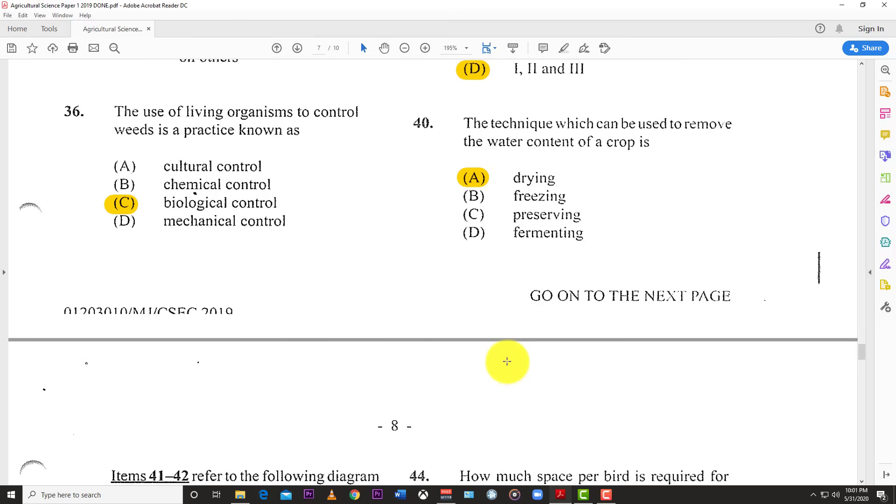Number 39: Which are advantages of processing hot peppers? The answer is 1, 2, and 3. It allows the farmer to maximize profit through value-added products, reduces incidence of post-harvest disease as a way to preserve harvest, and prolongs the storage life of the product. Normally processed goods have a longer shelf life than raw goods. Number 40: The technique which can be used to remove the water content of a crop is known as drying or dehydration.